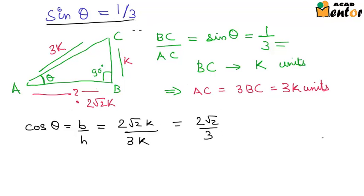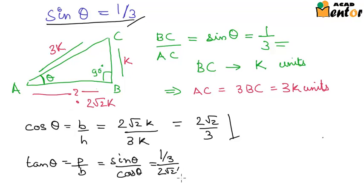So if sin theta is 1 by 3, cos theta would be 2 root 2 by 3, and tan theta would be perpendicular by base, or you can just say it is sin theta by cos theta. Sin theta was 1 by 3 and cos theta is 2 root 2 by 3, so tan theta becomes 1 by 2 root 2.